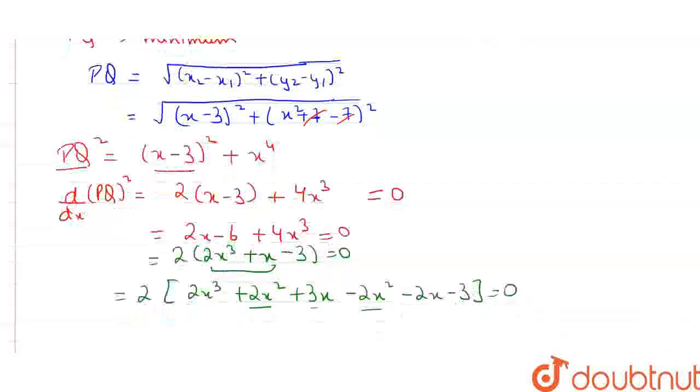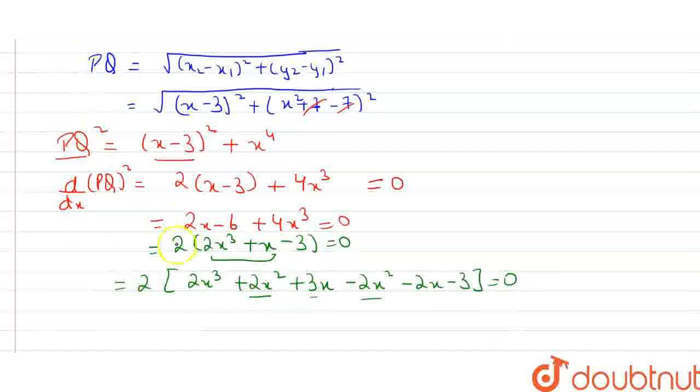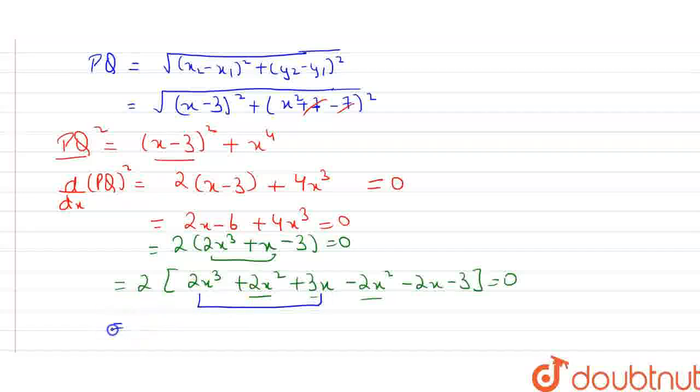Because this 2x square and this 2x will be cancelled and this 3x minus 2x is plus x only. So there will be no change in the equation. From this we are taking x common, so it is x times (2x square plus 2x plus 3) and from these three terms we are taking minus 1 common, it is (2x square plus 2x plus 3) equals 0.